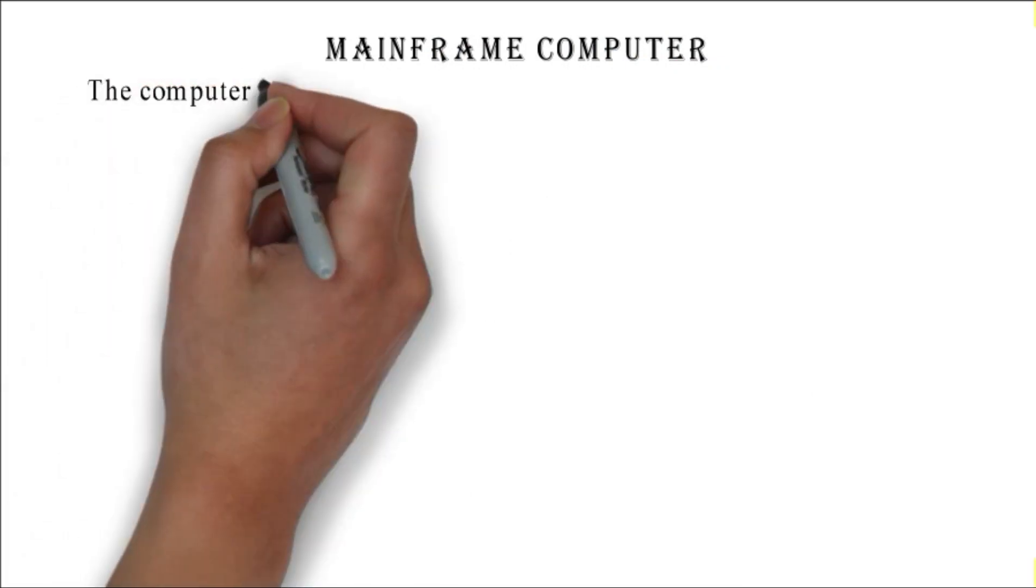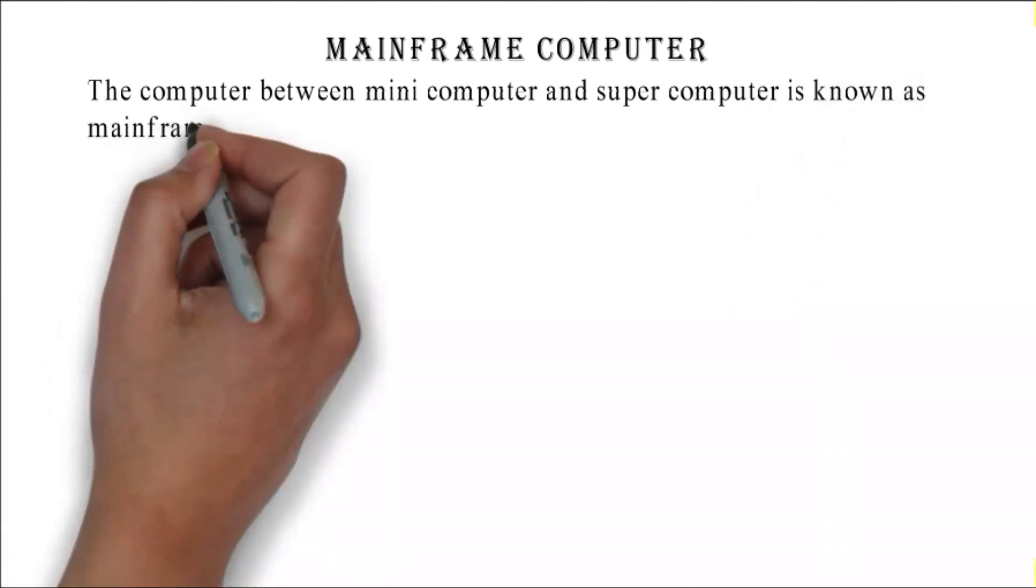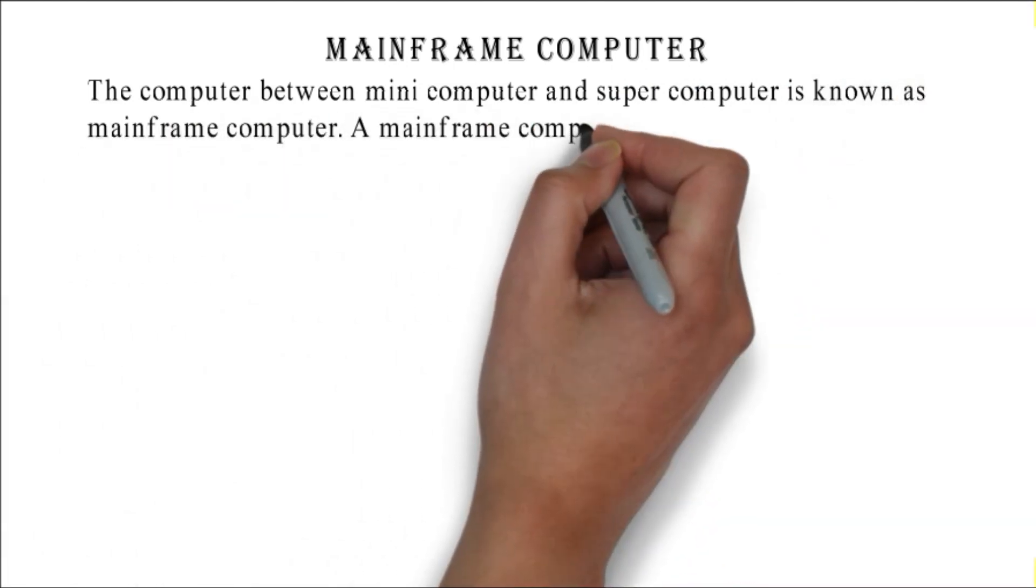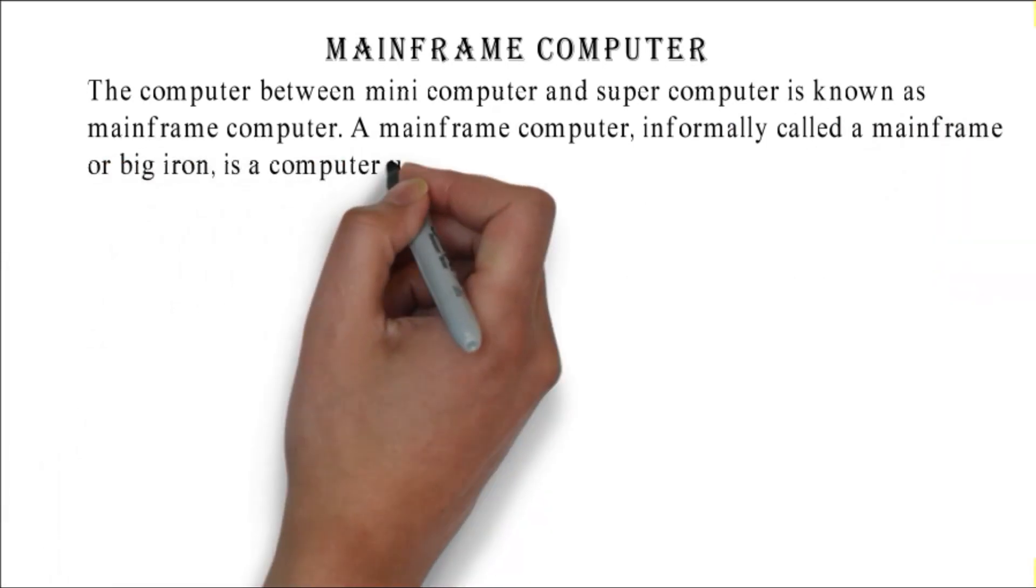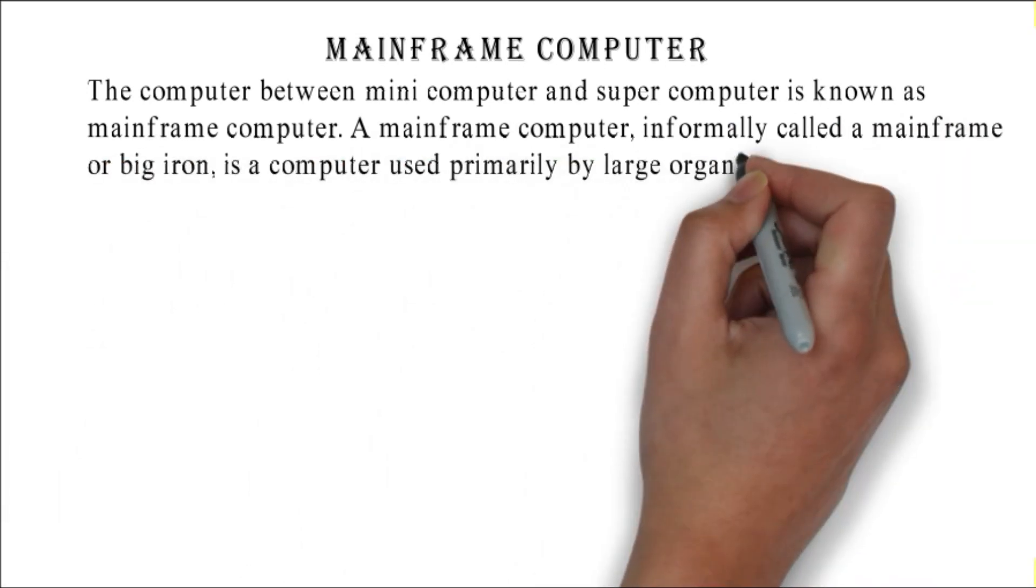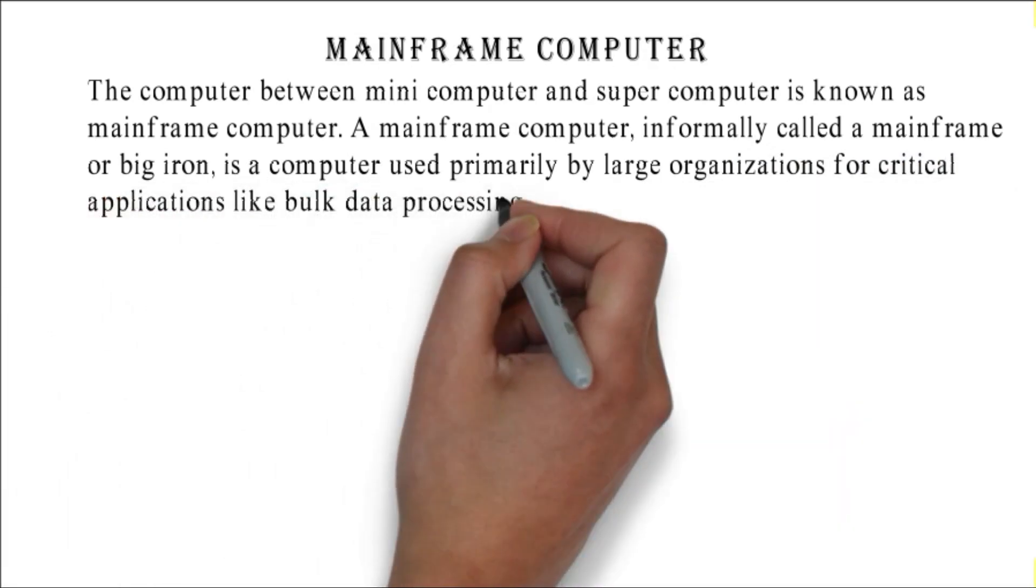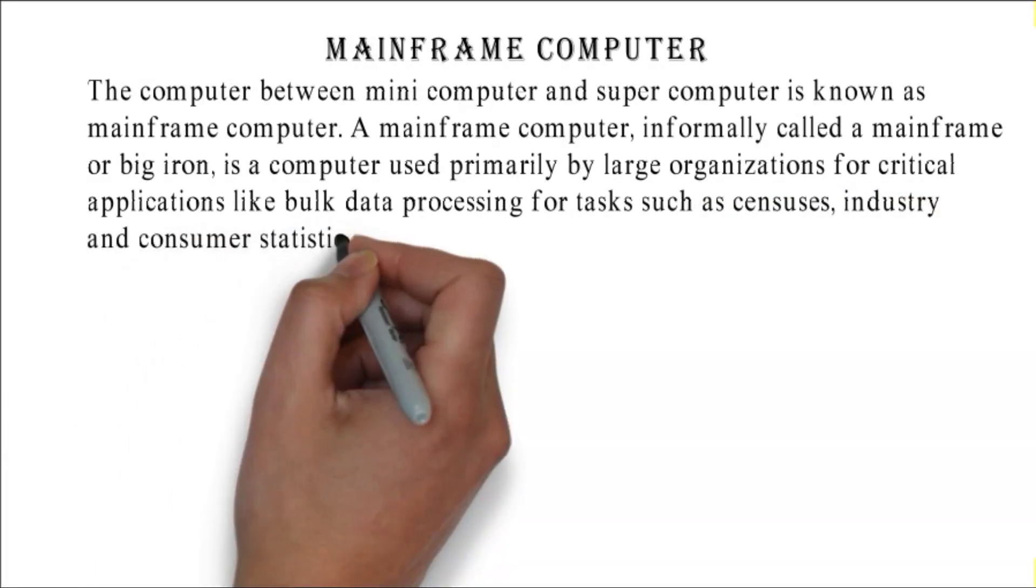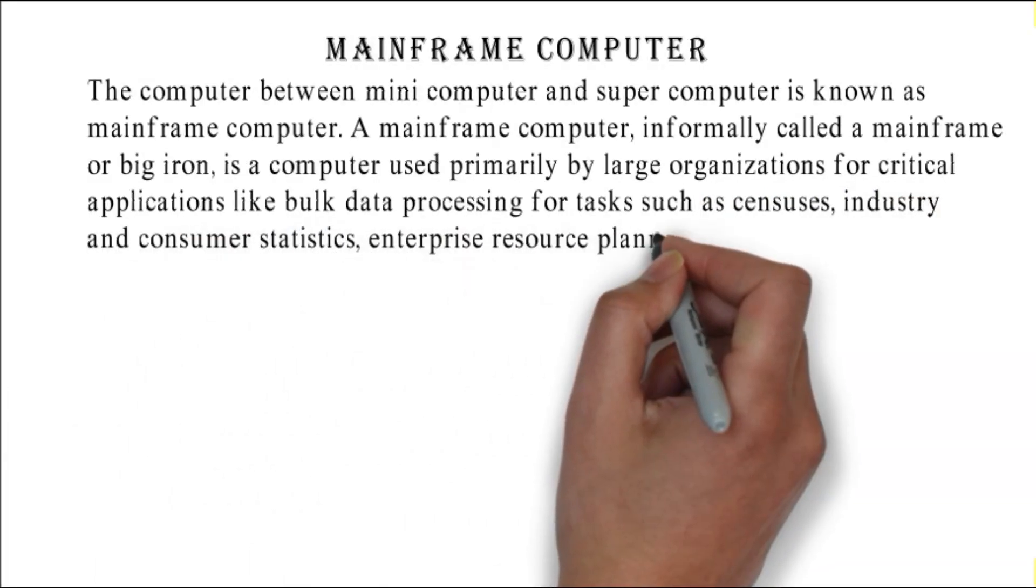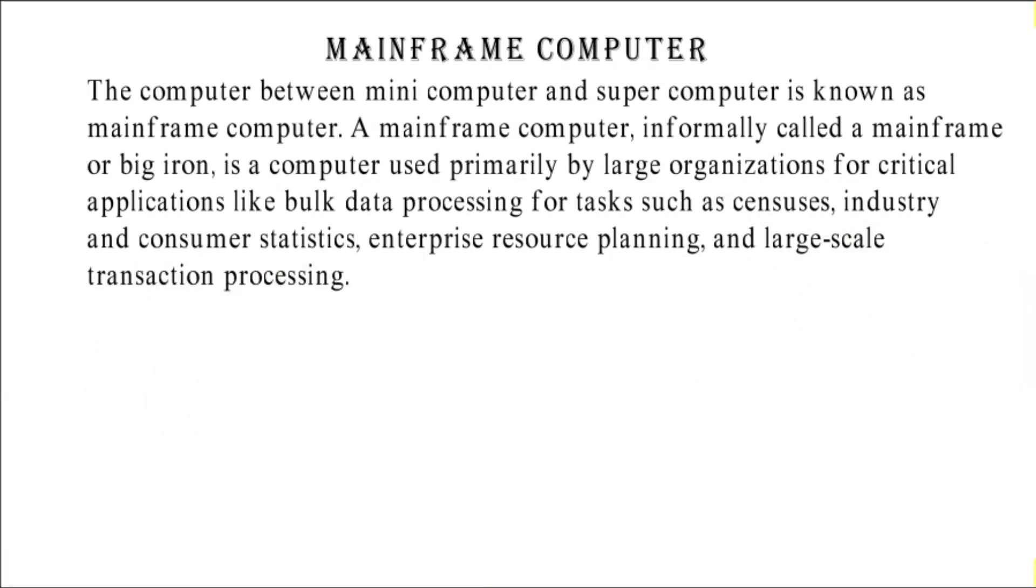Mainframe computer: the computer between mini computer and supercomputer is known as mainframe computer. A mainframe computer, informally called a mainframe or big iron, is a computer used primarily by large organizations for critical applications like bulk data processing for tasks such as censuses, industry and consumer statistics, enterprise resource planning, and large-scale transaction processing.